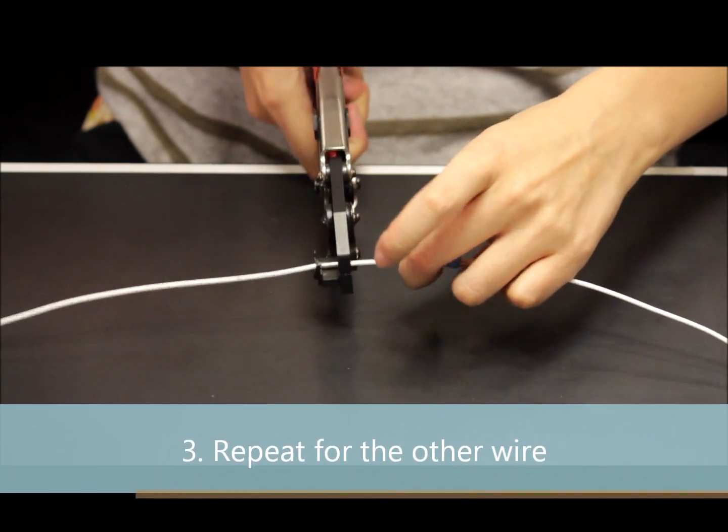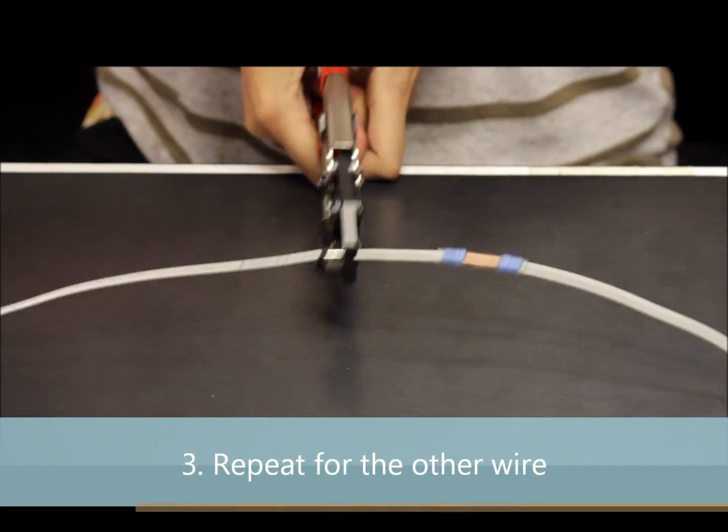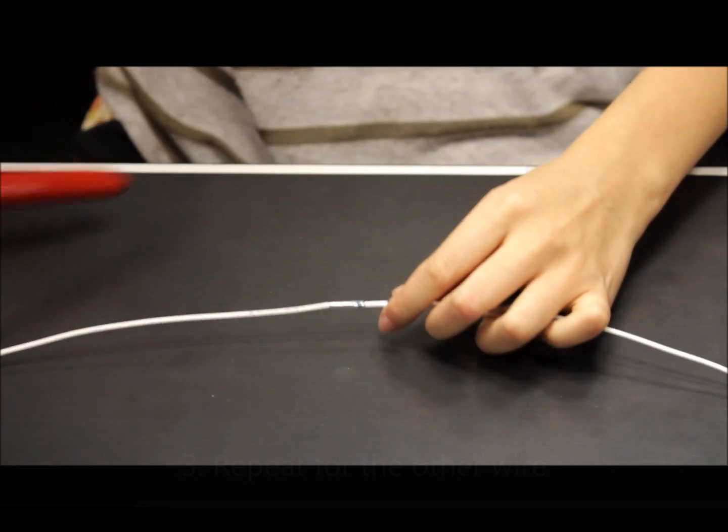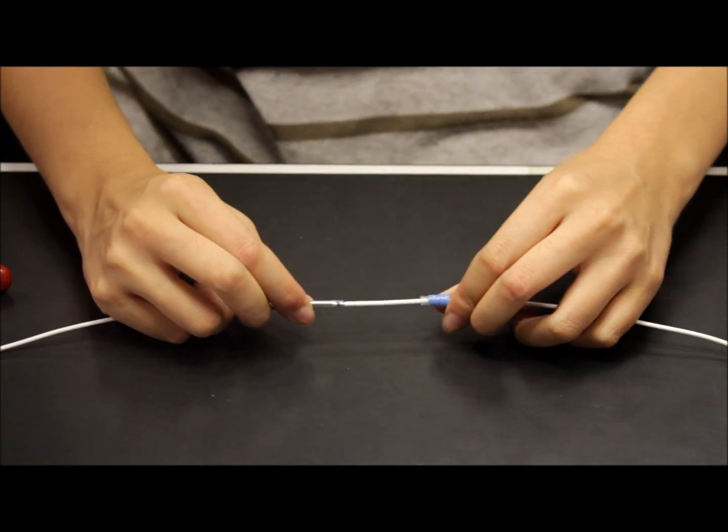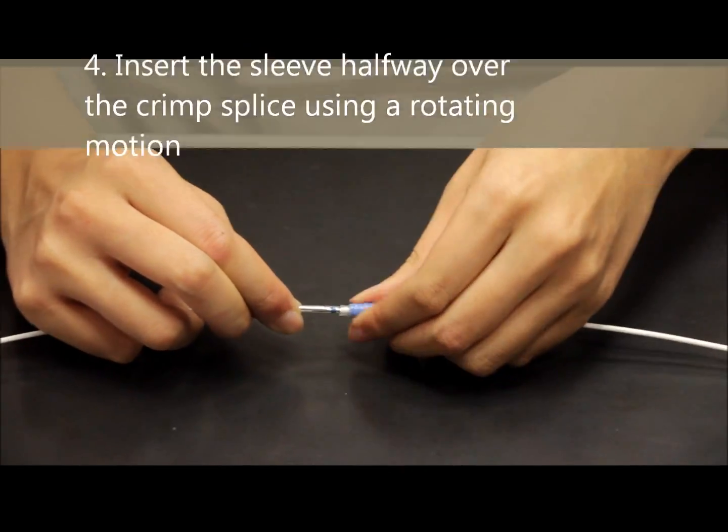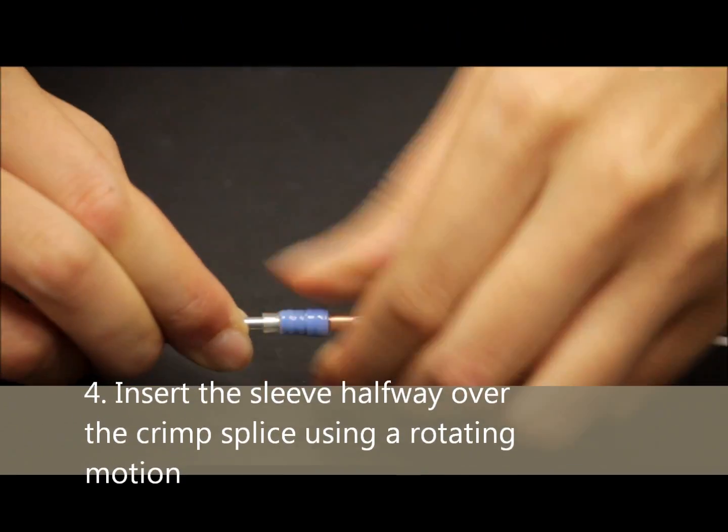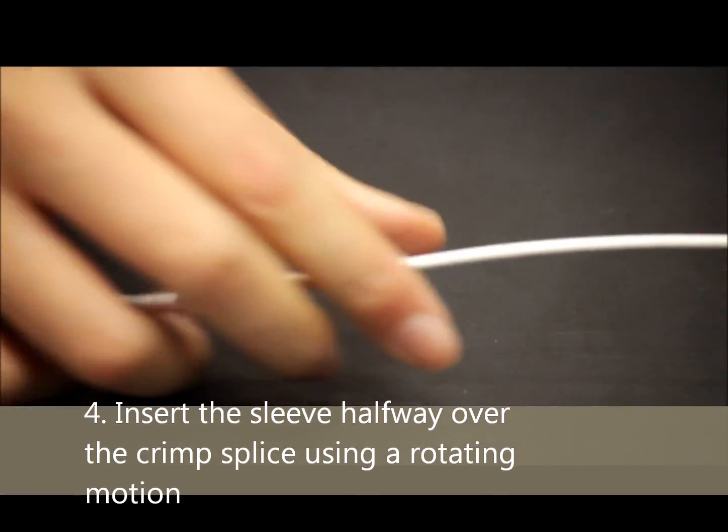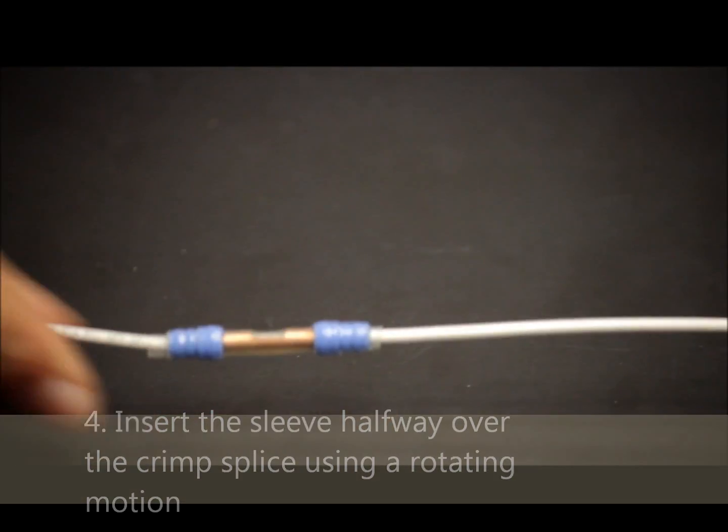Repeat for the other side. Insert approximately half of the crimp splice into the sleeve by pushing and turning in a rotating motion.